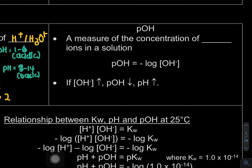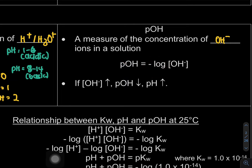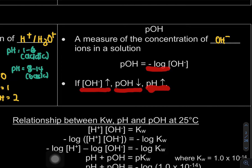Next we look at pOH. If pH is a measure of H⁺ concentration, pOH is a measure of OH⁻ ions in the solution. The 'p' means negative log. If OH⁻ is high, pOH is low — same relationship as before because of the negative log.